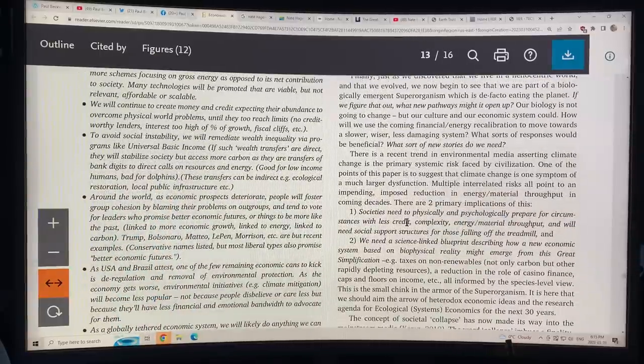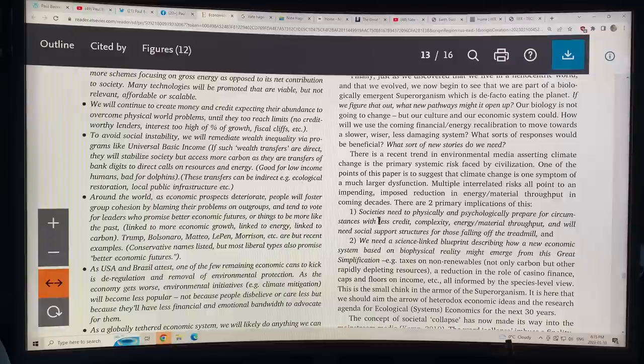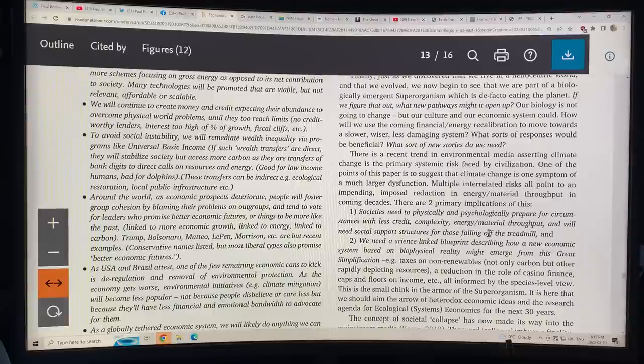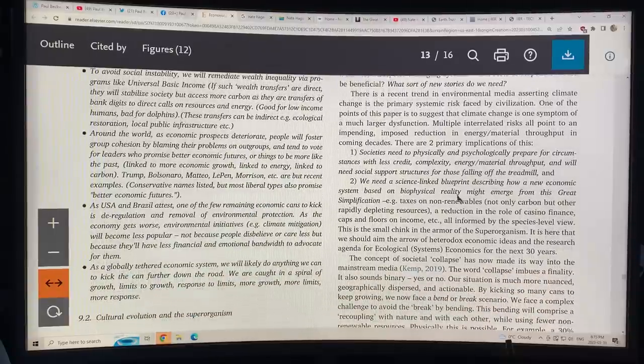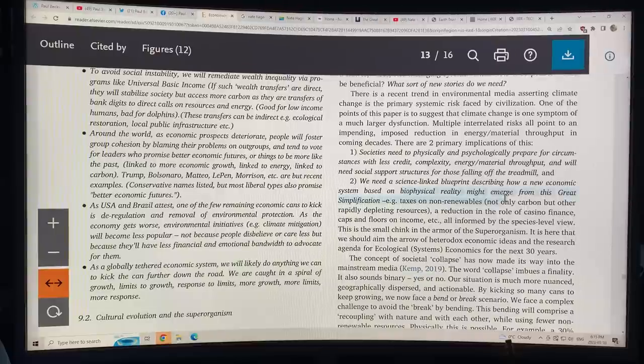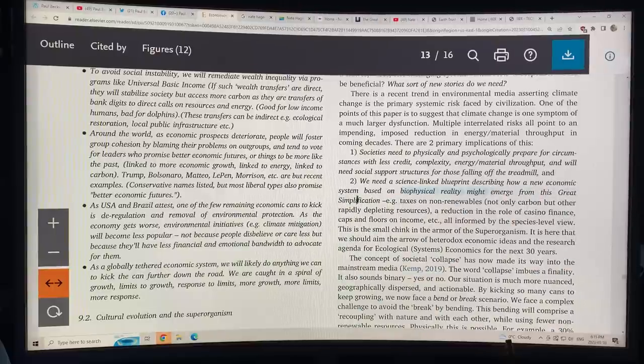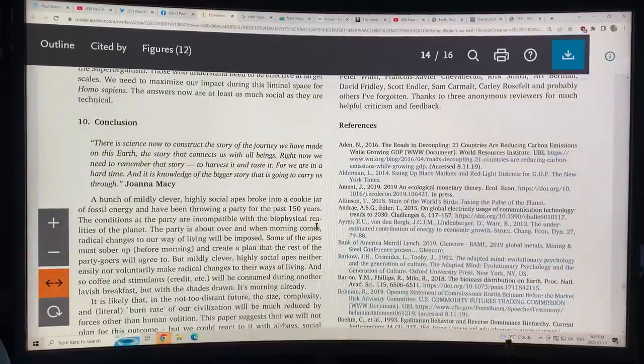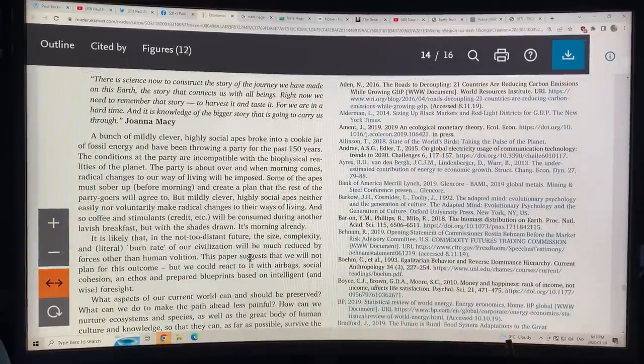So we need to physically and psychologically prepare for circumstances with less credit, complexity, less energy, material throughput. We'll need social support structures for those falling off the treadmill. We need a science-linked blueprint describing how a new economic system based on the biophysical reality might emerge from this great simplification. There you go, the great simplification.